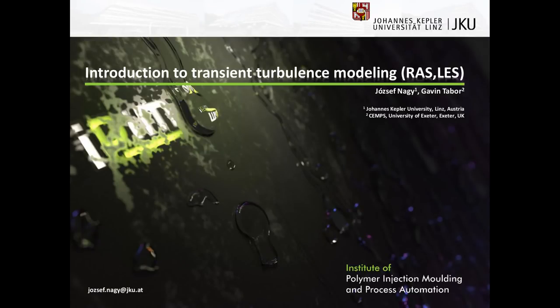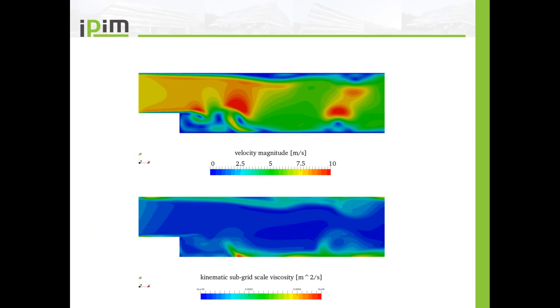Hello everyone, this is Jozef Nac here. In this video I am going to talk about turbulence modeling in transient simulations. This is a cooperation with Gavin Tabor from the University of Exeter. Here you see the finished results: the velocity magnitude and the kinematic subgrid scale viscosity. By the end of this tutorial I want you to understand what this subgrid scale viscosity is.